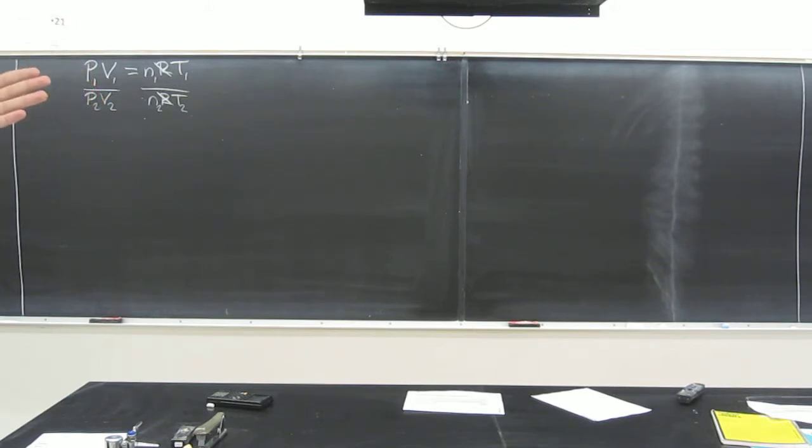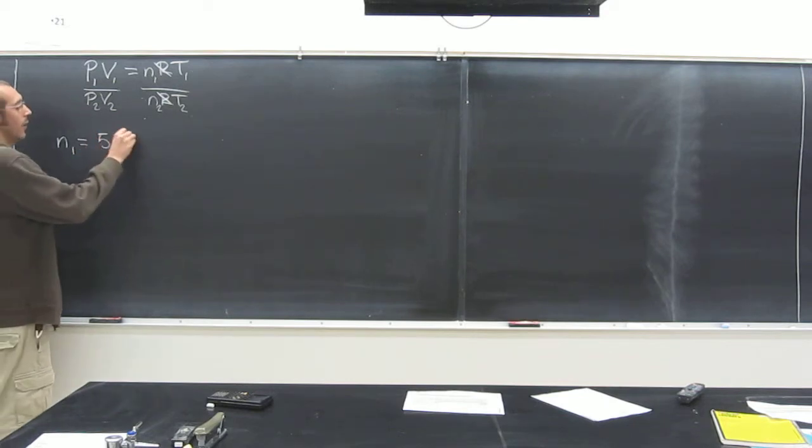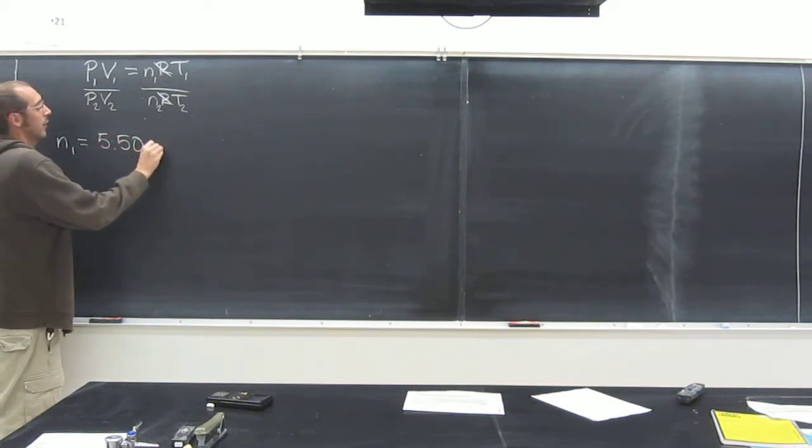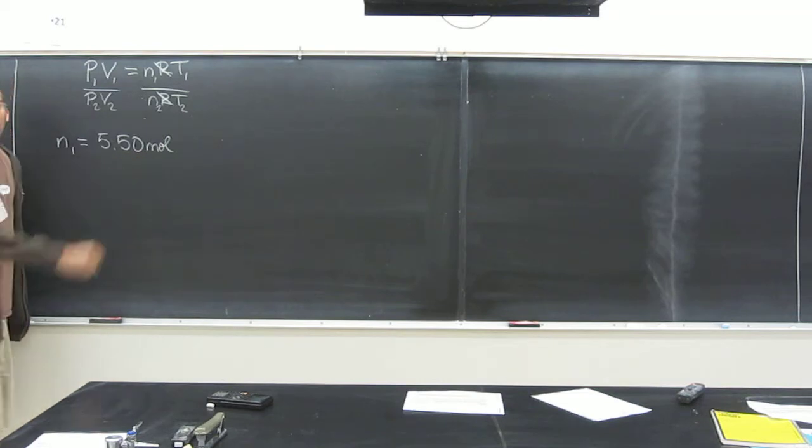So that problem is giving us a lot of information. Let's write down in numerical or mathematical terms what the problem is giving us. The initial number of moles it's saying, right? So it says if 5.5 moles of carbon monoxide occupy 20.6 liters, it's saying the initial moles is 5.5. Do you guys remember moles is N? So N1 equals 5.50 moles. And you've got to remember that 0 because it's significant.